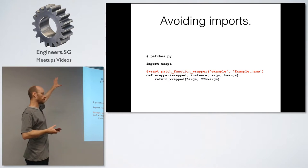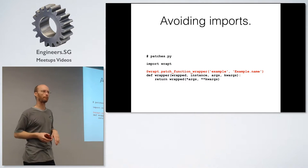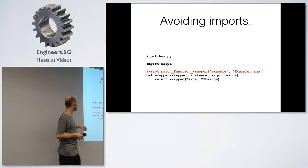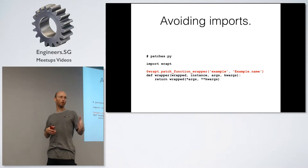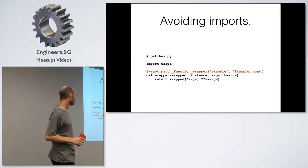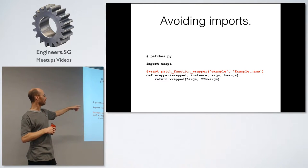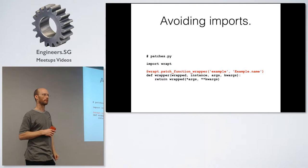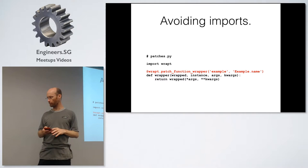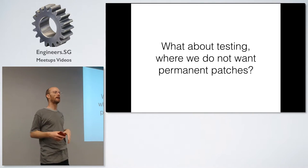We can clean things up a bit. Rather than importing the module and getting the class out of it manually, there's another decorator inside Wrapped called `patch_function_wrapper`. Instead of importing the module and getting the class out, you say: patch this function wrapper in module `example`, method `example.name`. When you import patches.py, it zips through, sees this decorator, and applies that wrapper — and it's all done.